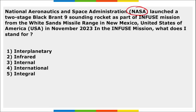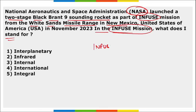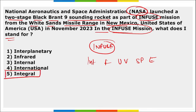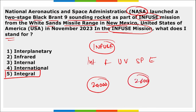NASA launched a two-stage Black Brant IX sounding rocket as part of the INFUSE mission from White Sands Missile Range in New Mexico, USA. INFUSE stands for Integral Field Ultraviolet Spectroscopic Experiment, where 'I' stands for Integral. The mission aims to study the Cygnus Loop — a 20,000-year-old supernova remnant located 2,600 light-years from Earth, also known as the Whale Nebula.